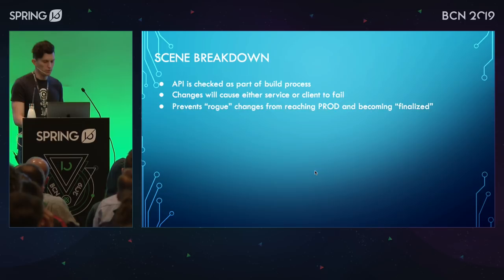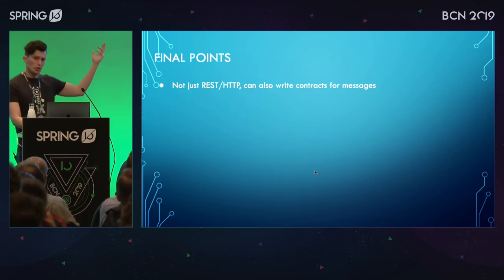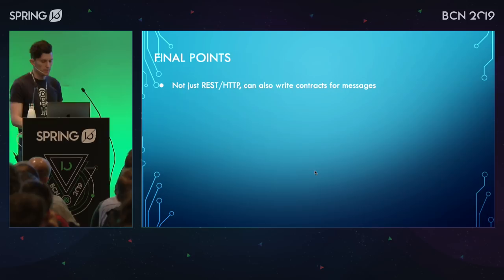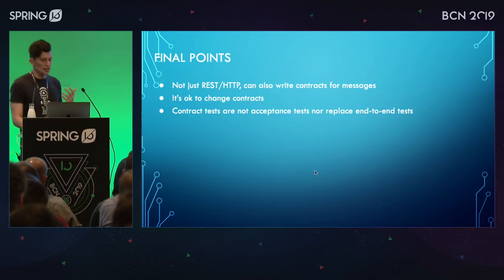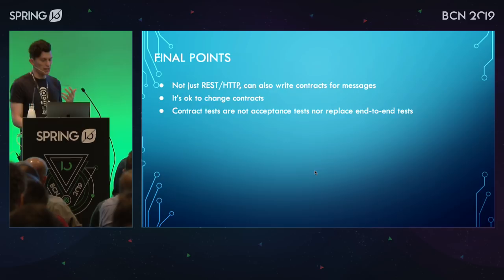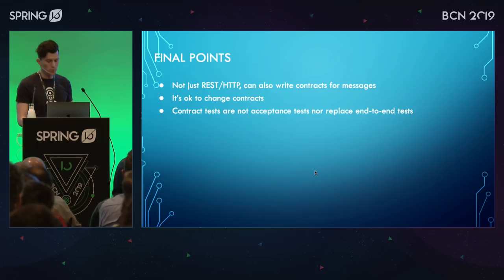Altering the API — the API is going to be checked every time as part of the build process. If someone makes a change to how the API looks, it's going to fail. If a contract has been updated but the client hasn't been updated to consume it, the client's tests will fail when testing against that stubs artifact. This prevents rogue changes from reaching production. Just a few final points: in this example I only showed REST HTTP, but Spring Cloud Contract also works for messaging like Kafka. It's always okay to change contracts as the API evolves. Contract tests should not be considered acceptance tests nor replace end-to-end tests — they're just part of your test suite. You won't be able to test things like resiliency, timeout, performance, or edge cases, but you'll make integration tests much easier and quicker to run.